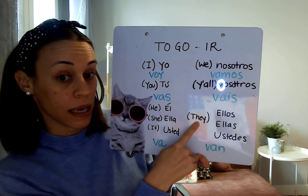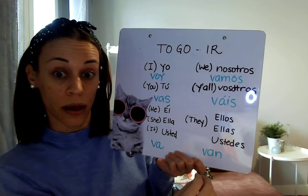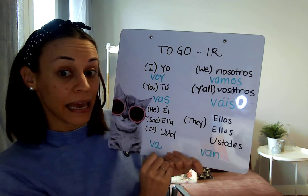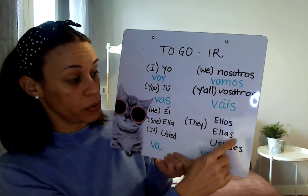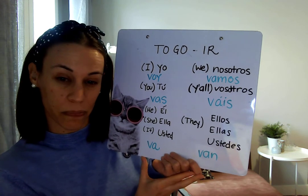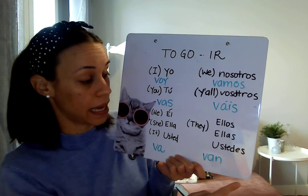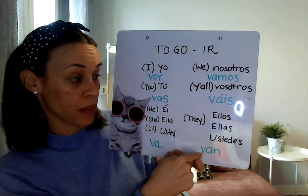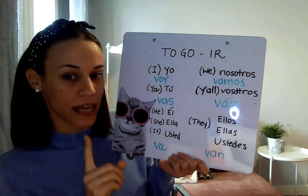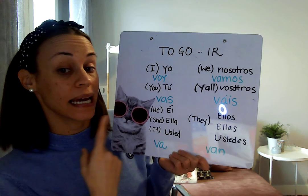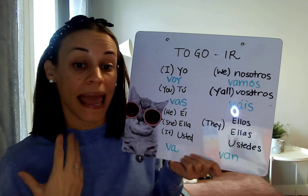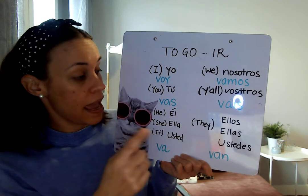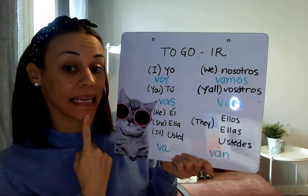If we want to say 'they,' it will depend. If it's all a group of males, or a mixed group of females and males, we say ellos. If it's a group that only has females in it, we say ellas. And if it's a group of people we don't know very well or we want to be polite, we say ustedes. So: ellos van, ellas van, and ustedes van. You notice when you have two L's together it makes the 'ya' sound. So remember, the V makes the B sound, and the two L's together make the 'ya' sound.